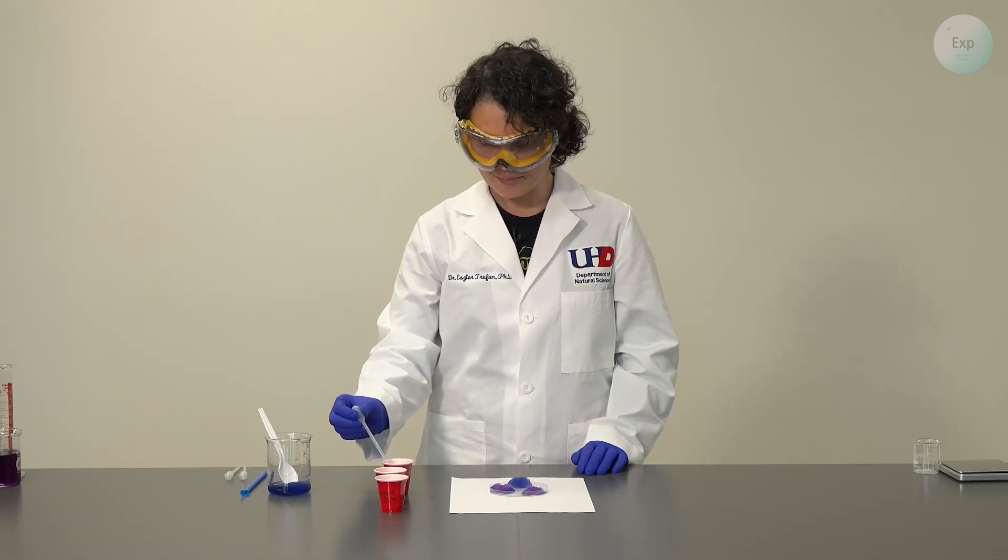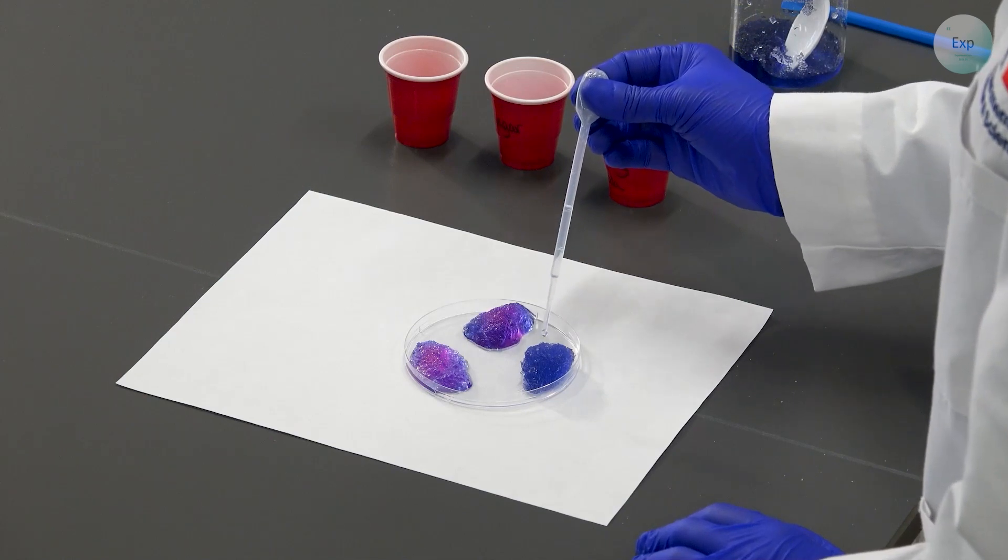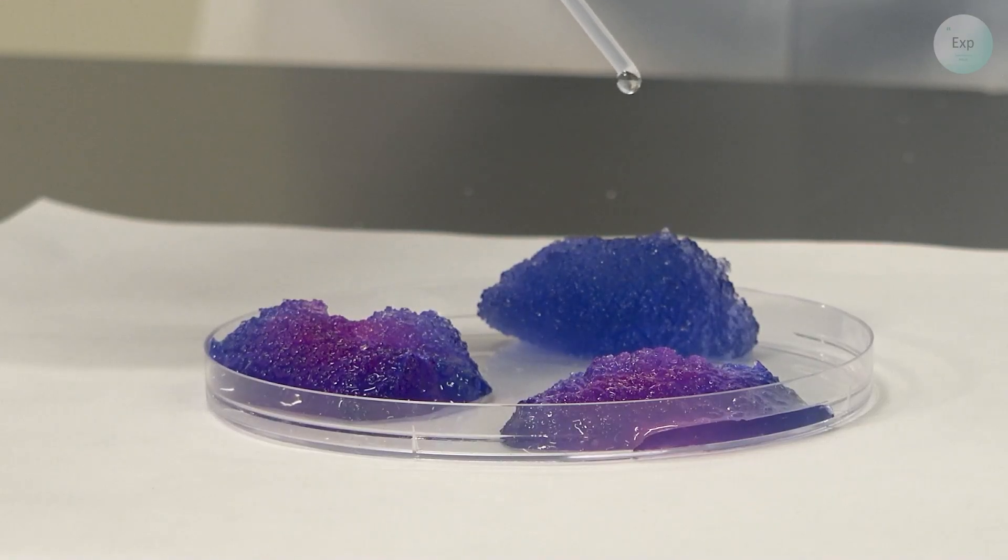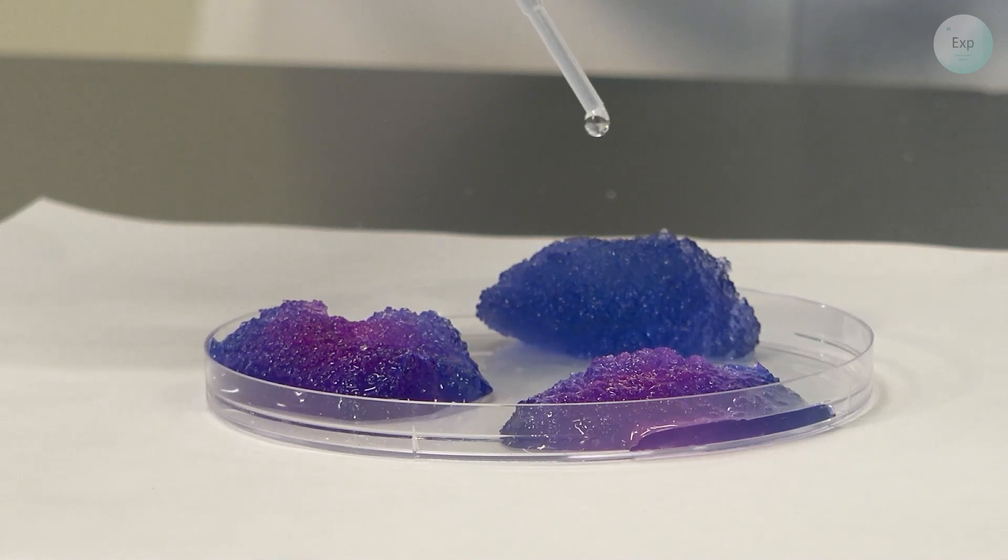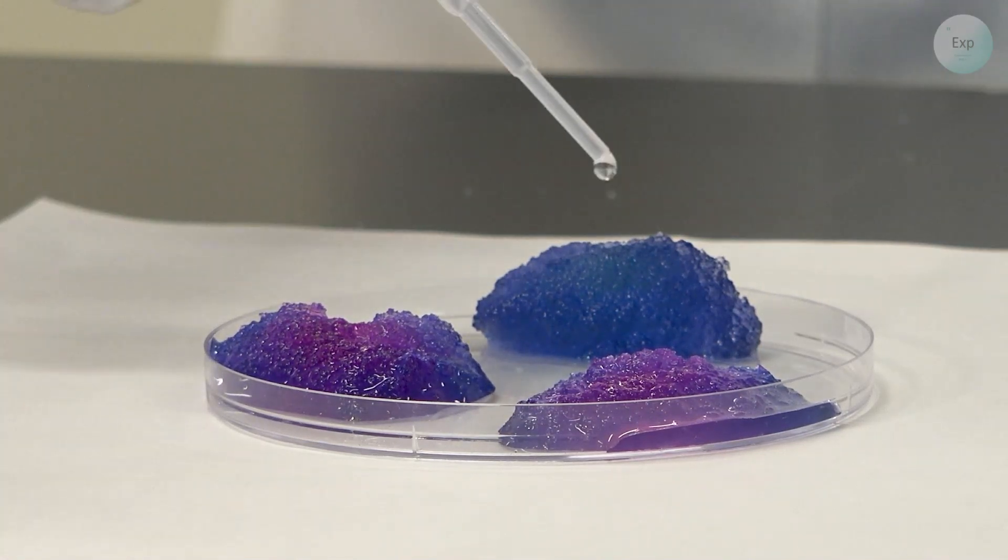Finally, we're going to add some saturated baking soda solution to the third one. It is already changing colors a little bit, but if it's still not clear, we can add more.